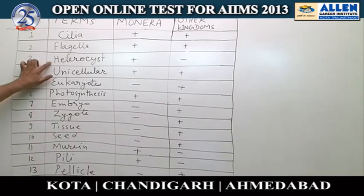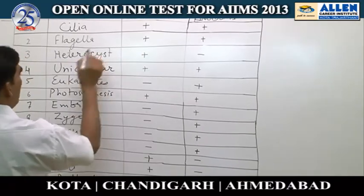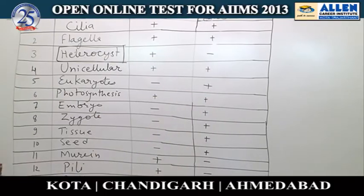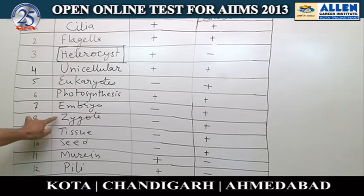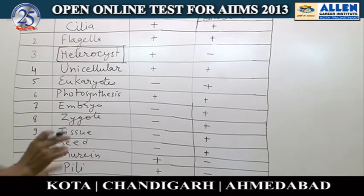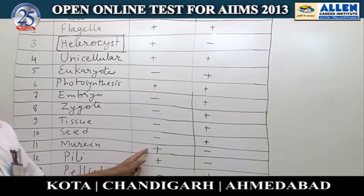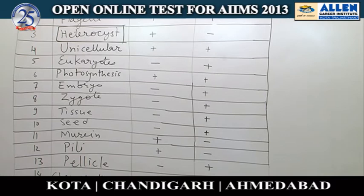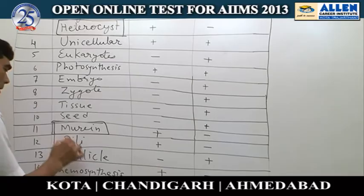Looking at the table with plus for presence and minus for absence: character number three — heterocysts — is present in Monera but not in other kingdoms. Murine — its presence is a characteristic feature of Monera. Presence of pili is also a characteristic feature of Monera.